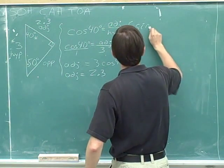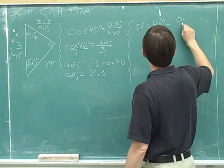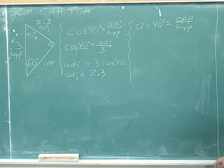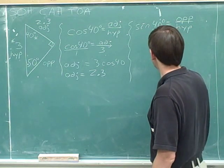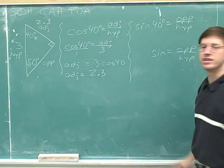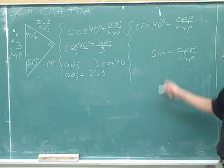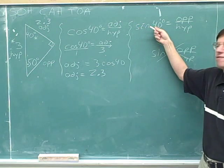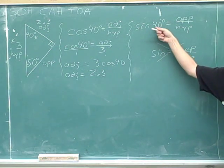We need a trig function that involves the opposite and the hypotenuse — that's the sine. So the sine of 40 degrees is the opposite side over the hypotenuse. I hope that all of you are always writing down the angle when you write things down. It doesn't mean anything to say that the sine is opposite over the hypotenuse without specifying the angle. You have to say what angle you're taking the sine of, so say the sine of 40. This is the correct way to write it.